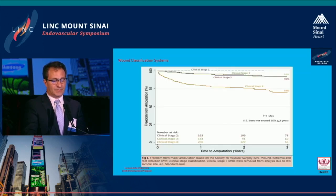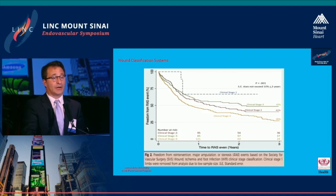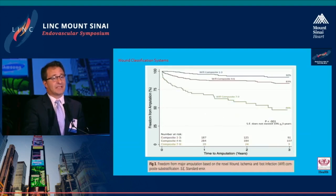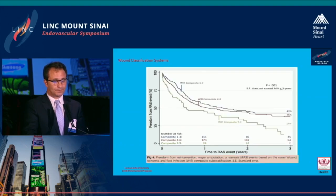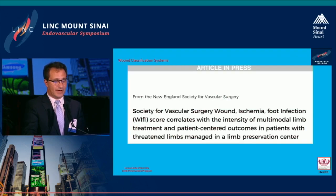Kaplan-Meier analyses show that clinical stages 2 and 3 behave very similarly in freedom from amputation, with clear divergence versus stage 4. There is a clear correlation between higher clinical stage and higher RAS events, demonstrated both by clinical stage and by composite scores. A substantial body of literature supports and validates WIfI as a proper stratification tool with strong correlation to amputation rates, survival, and overall limb preservation.